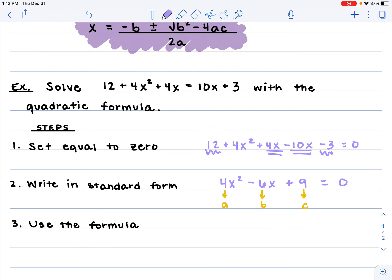Here we're going to plug that into our formula. It says x equals the opposite of b. My b value is -6, so the opposite of -6 is positive 6, plus or minus the square root of -6 squared. This is b² - 4 times my a value, which is 4, times my c value, which is 9, all over 2 times my a value.